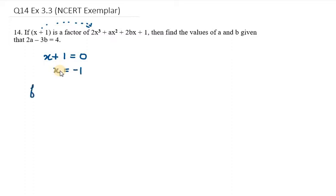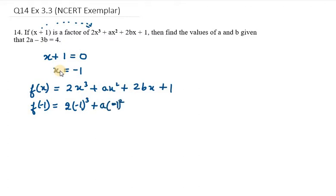Now we need to put the value of f(x) with x as -1. So f(x) = 2x³ + ax² + 2bx + 1. Now we put the value of -1: f(-1) = 2(-1)³ + a(-1)² + 2b(-1) + 1.